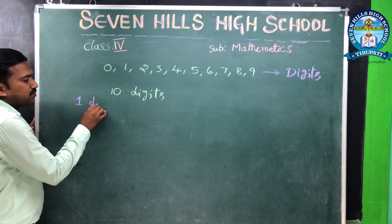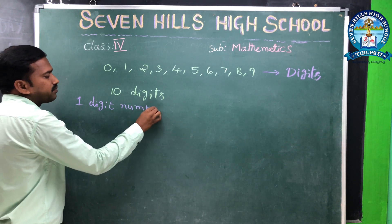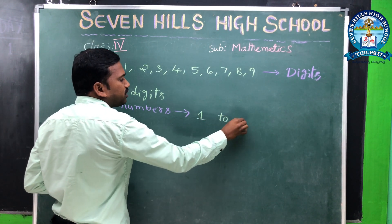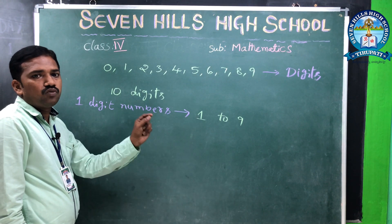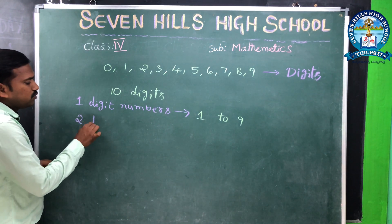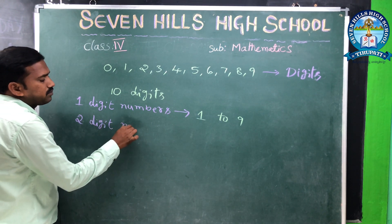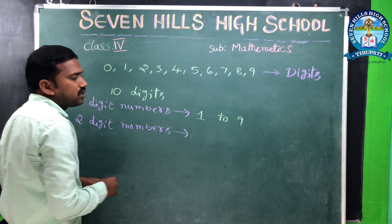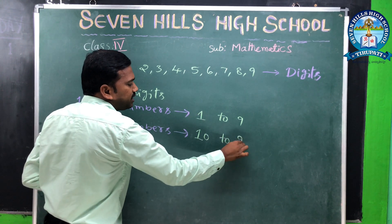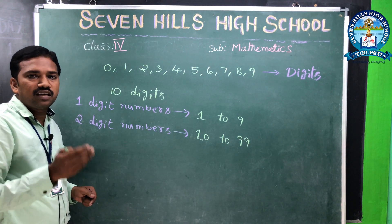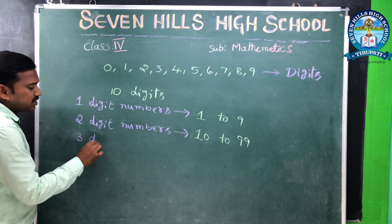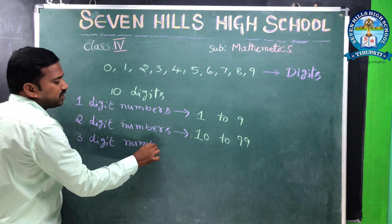One digit numbers are 1 to 9 — that means 1, 2, 3, 4, 5, 6, 7, 8, 9. Two digit numbers start from 10 and go up to 99. Three digit numbers start from 100 and go up to 999.